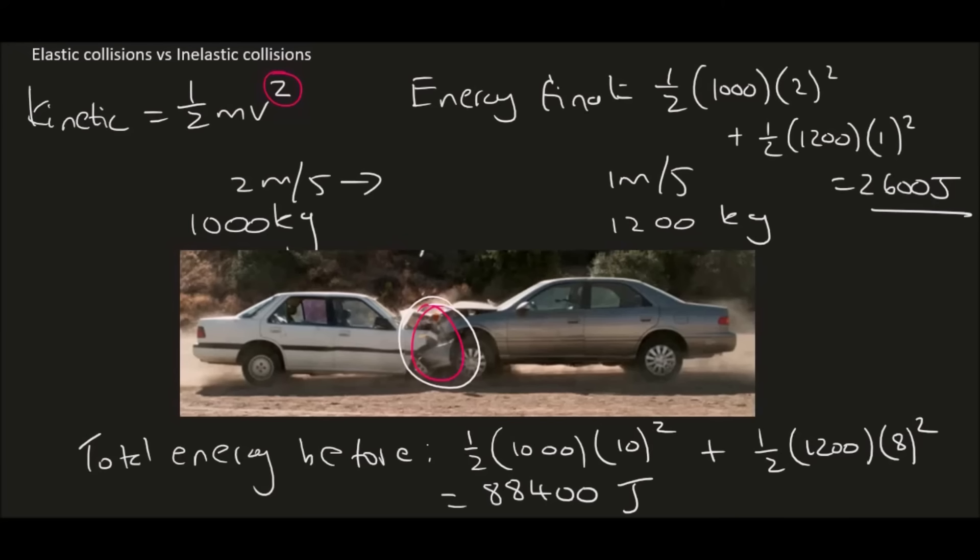So the total system had eighty eight thousand four hundred joules before the collision, two thousand six hundred joules after the collision. Energy has been lost. Where did it go? Well, some of the energy gets absorbed or gets released in the form of sound, because if we had to watch this, we would definitely hear about it. And then also a lot of energy gets used up in deforming the car, okay? I don't know about you, but if you had to try to deform a car like that, you'd have to use quite a lot of energy. So that energy gets released.